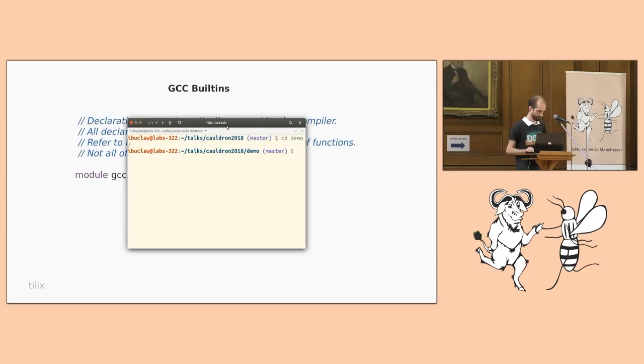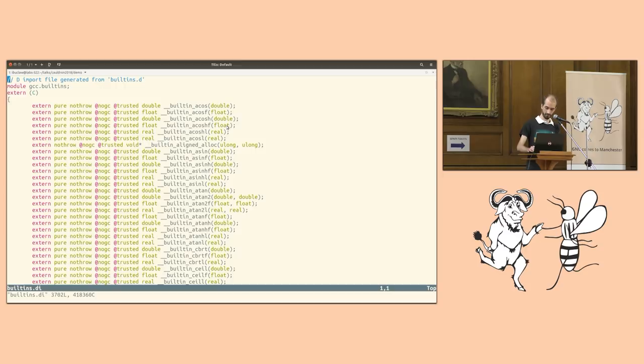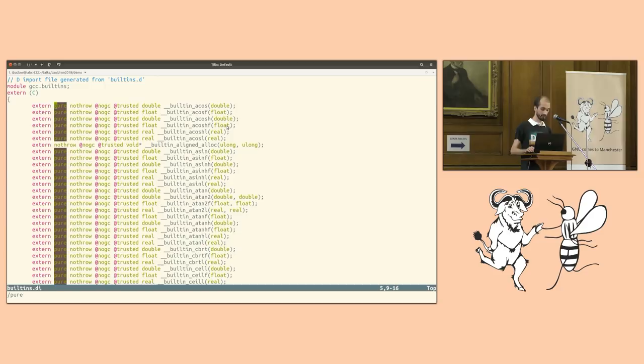So, we have a built-ins module. I want to compile it, which then generates builtins.di. And so, inside this, just to sort of give a quick overview of what we have. So, all built-ins which have the pure attribute are marked as pure in the D module. Note that not all are actually done so. All built-ins are marked as nothrow, because they are nothrow in the D sense, as well as nogc.